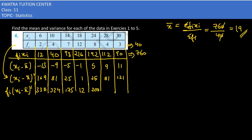4 into 81 is 324. 3 into 121 is 363. Now adding up the last numbers so that we get the variance.